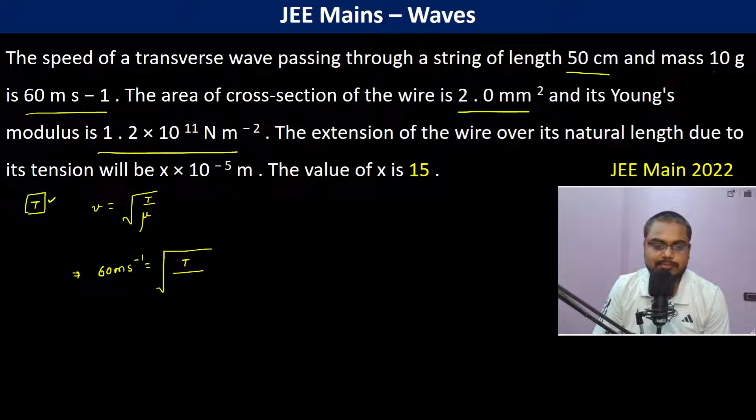10 grams, so we write 10 into 10 to the power minus 3 kg per unit length, that is 50 centimeters which is 0.5 meters.